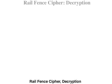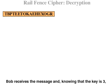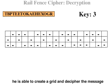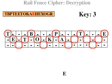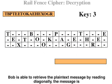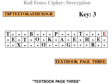Rail fence cipher decryption. Bob receives the message and, knowing that the key is 3, he is able to create a grid and decipher the message by inserting the text into the appropriate boxes. Bob is able to retrieve the plain text message by reading diagonally. The message is 'Textbook page 3.'